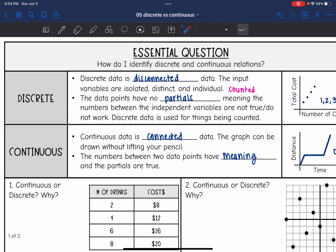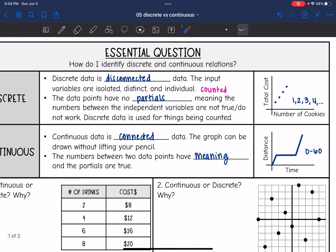Okay, then continuous data is connected data. It can be drawn without lifting your pencil. And then the numbers between the two data points do have meaning because the partials are true.